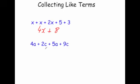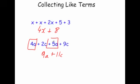Next: 4a plus 2c plus 5a plus 9c. Let's add up the a's first: 4a plus 5a is 9a. And 2c plus 9c is equal to 11c. So the answer would be 9a plus 11c. Be careful to collect the same letters — 4a plus 5a is 9a, and positive 2c plus 9c is 11c.